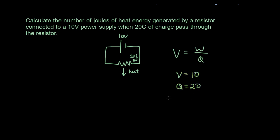So that means 10 is equal to W over 20, so then W is equal to 10 times 20, which is 200 joules.